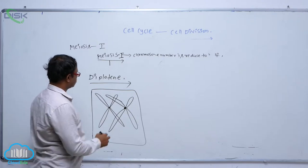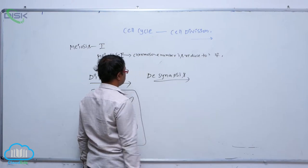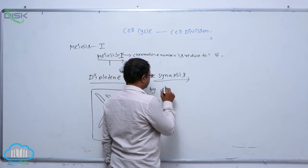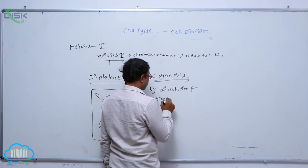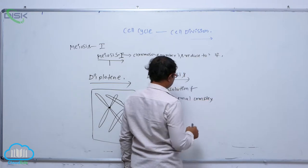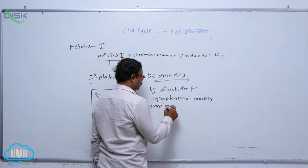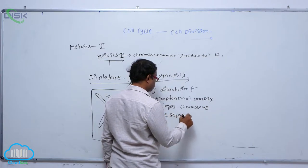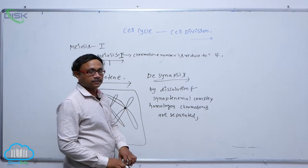It is known as the diplotene. Diplotene means it is known as desynapsis. Diplotene means desynapsis. By the dissolution of the synaptonemal complex, homologous chromosomes are separated.